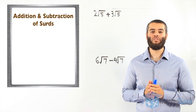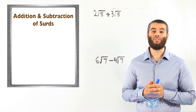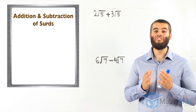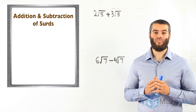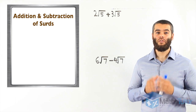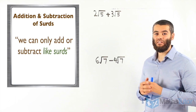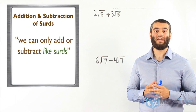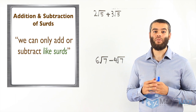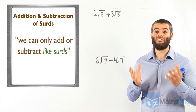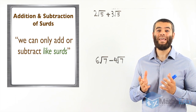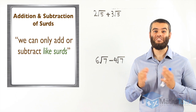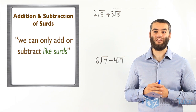Hey everyone, today we're going to learn about adding and subtracting thirds. We're going to learn that thirds are very similar to algebra — we have similar rules. When we're adding or subtracting thirds, we have to collect like thirds, just like collecting like terms in algebra. We can only add or subtract like thirds. Let's see some examples to understand how to do it.